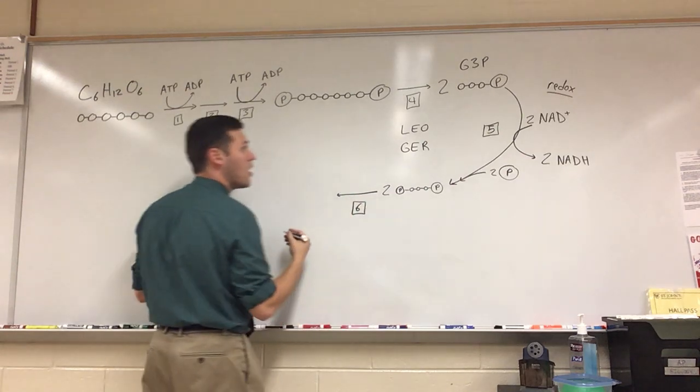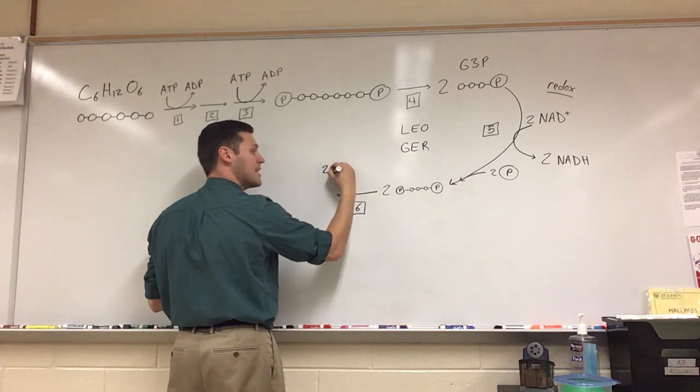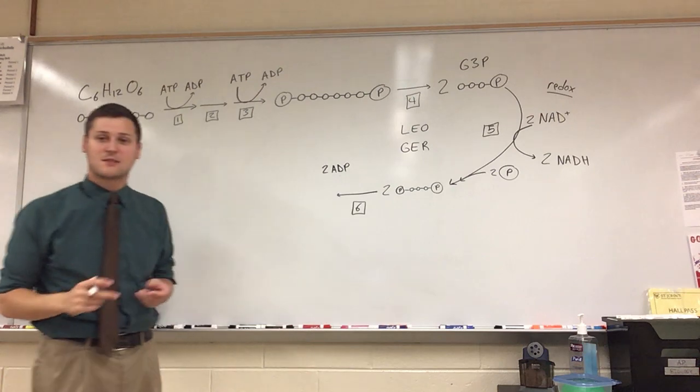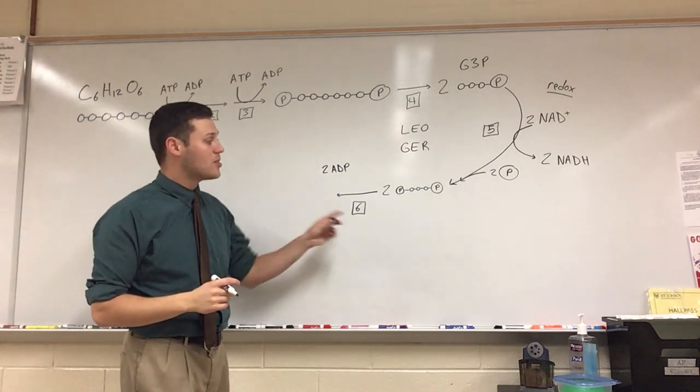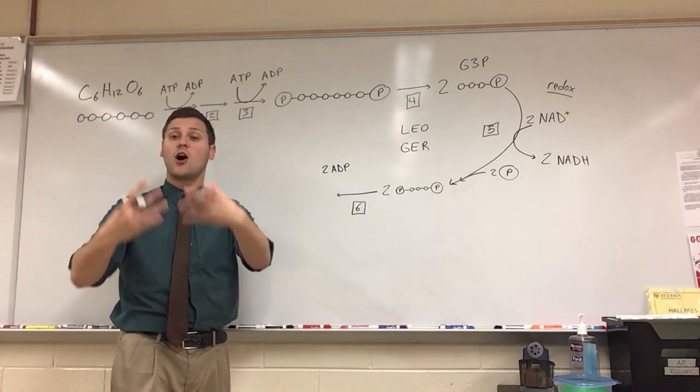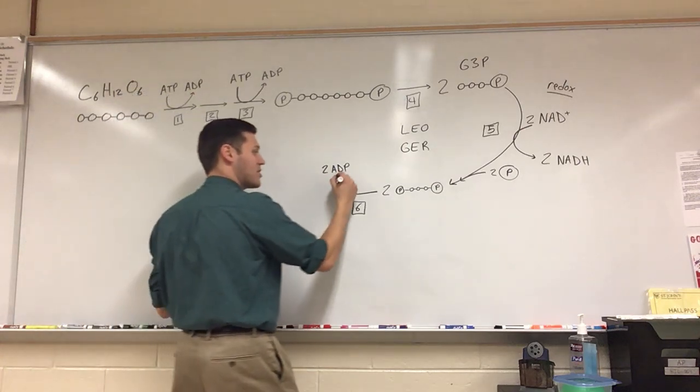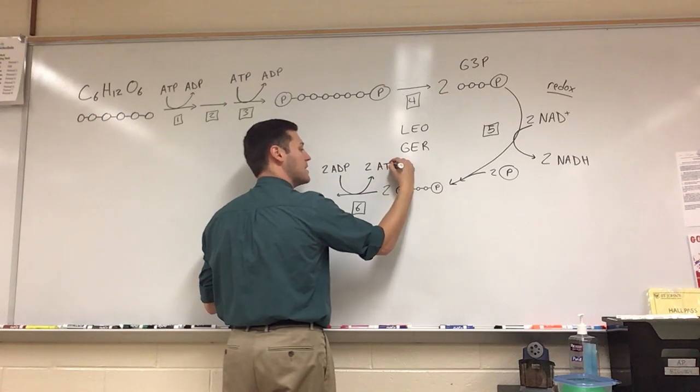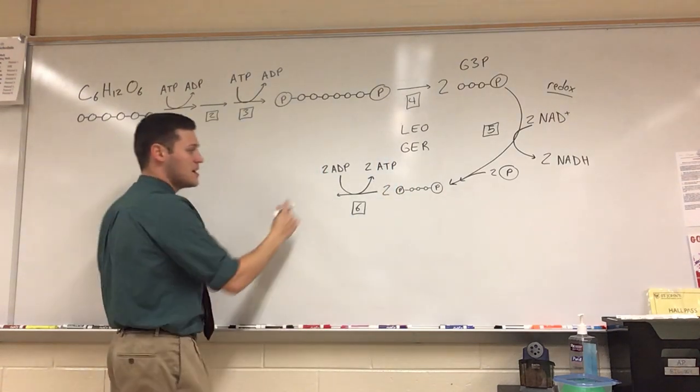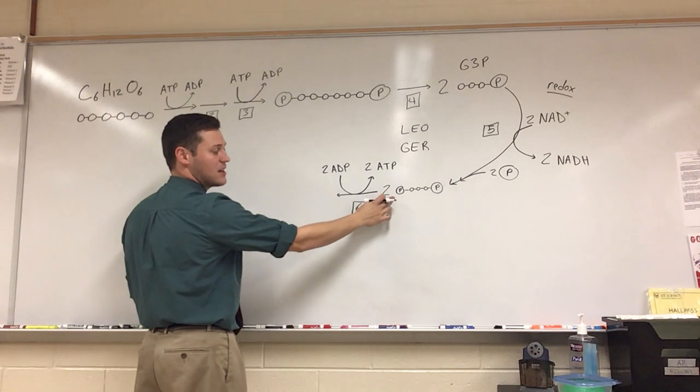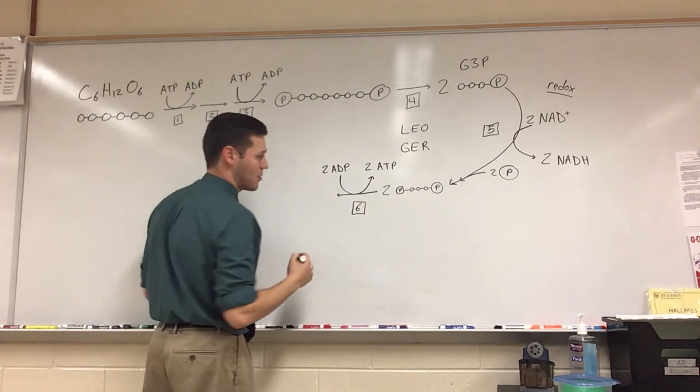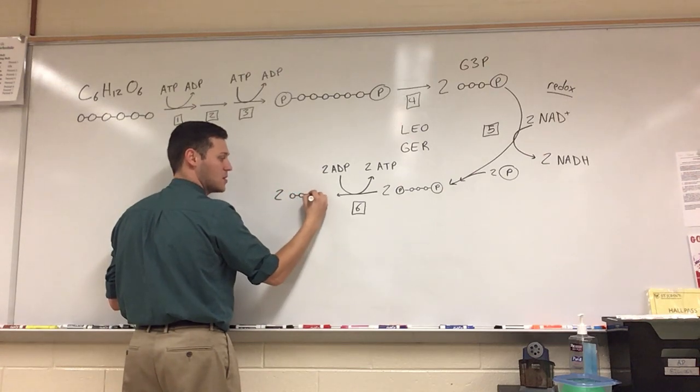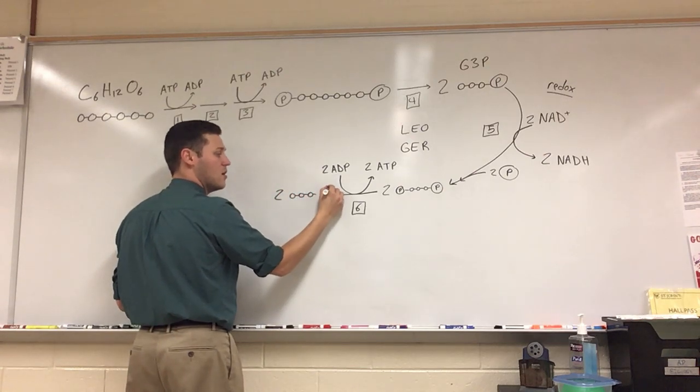So we have our molecules going into step six. We have two ATP, or two ADP rather, so diphosphates. Two ADP come along, and they start to harvest those phosphates. So they are coming in, they're picking up those phosphates, and becoming two ATP. So now we pull the phosphate from one of each of these three carbon molecules. So now we have two three carbon molecules with only one phosphate each.